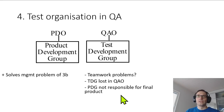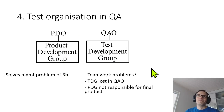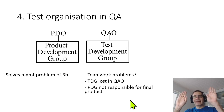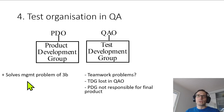Another big issue with this approach is that the product development group is not responsible for the final product or its quality. They just develop something and throw it over the wall to a separate organization, whose job is to attach quality on top of the product. This can be a recipe for disaster and can lead to very long development times where testing takes forever because of this organizational difficulty.